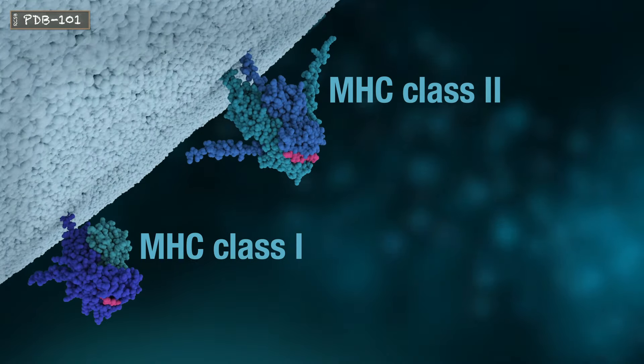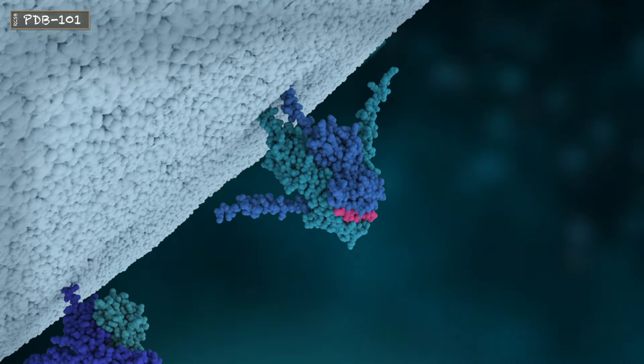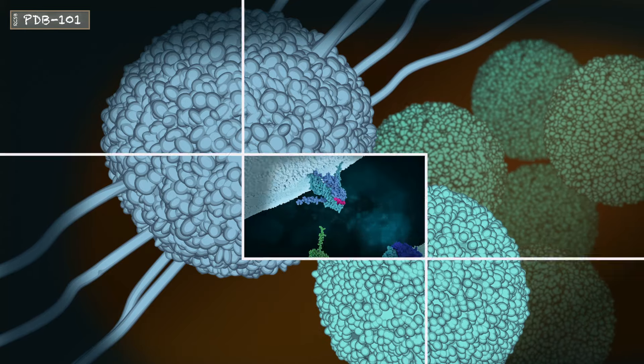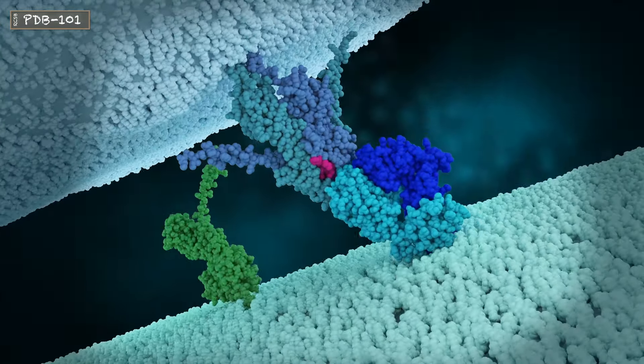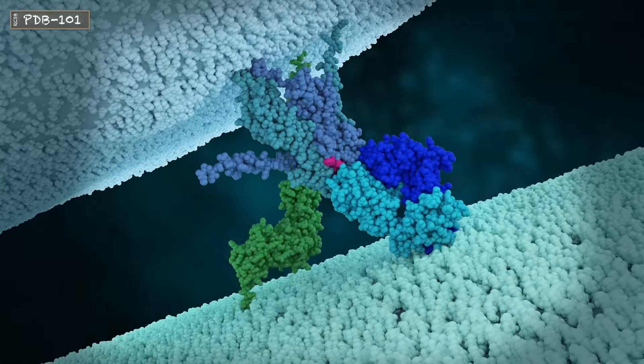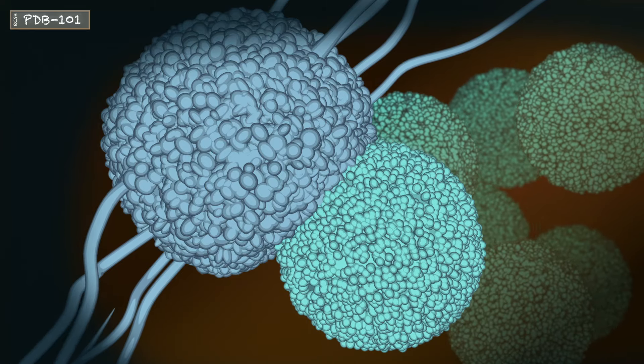By presenting antigens on their MHCs, dendritic cells enable T cells to recognize their foes. After some time, a dendritic cell finds a T cell bearing a TCR compatible with the antigen it is presenting. The TCR binds to the antigen-MHC complex, initiating the process of T cell activation.